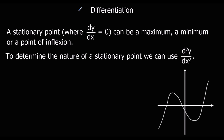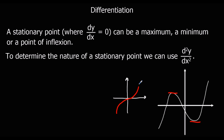They can be a maximum, which is a top turning point. It can be a minimum, which is the bottom turning point. Or it can be a point of inflection, where the gradient goes to zero but then carries on going in the same direction — like the x cubed graph, where the gradient goes to zero but then carries on in the same direction.